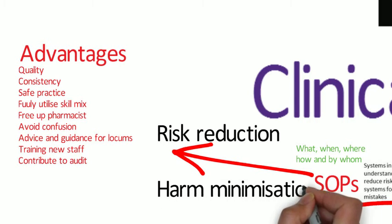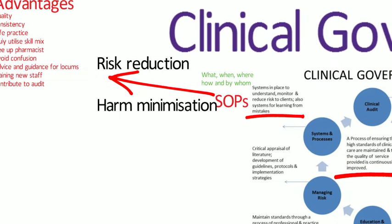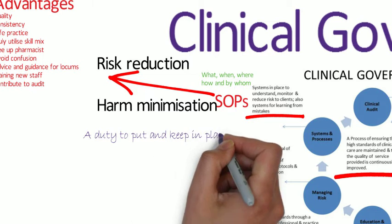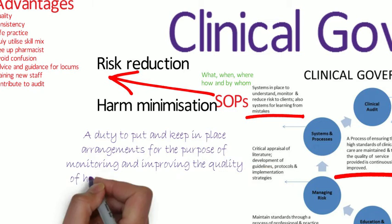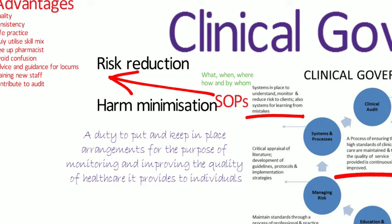Sticking with the concept of clinical governance, all NHS organisations — either centrally, such as hospital pharmacies, or via contract, such as community pharmacies — are under a statutory requirement to have clinical governance procedures in place. They have a duty to put and keep in place arrangements for monitoring and improving the quality of healthcare provided to individuals. The key role of SOPs is to help manage and minimise risk to the patient.